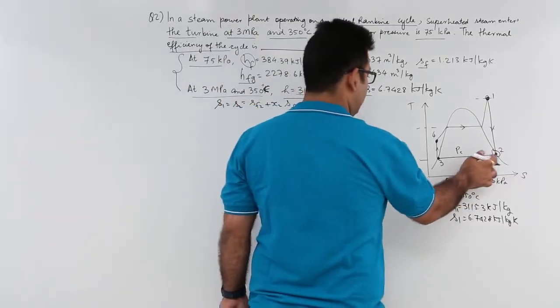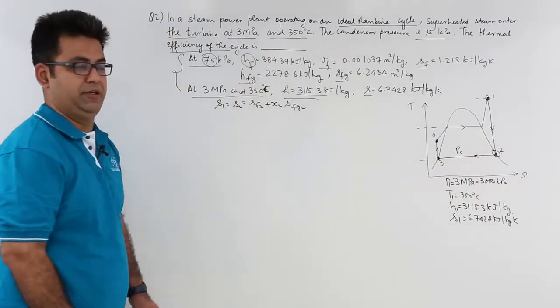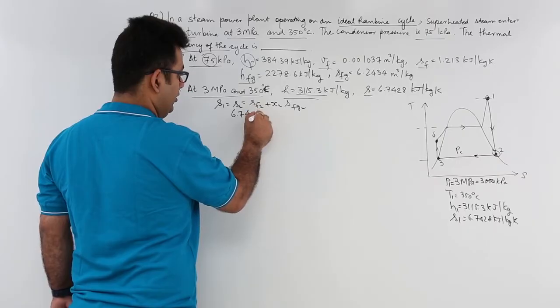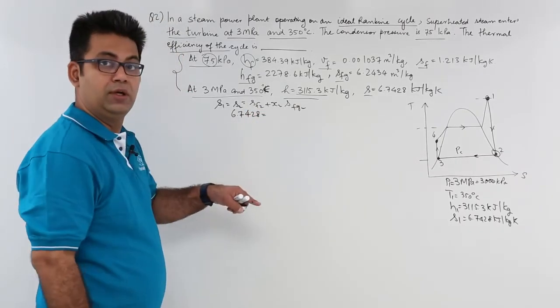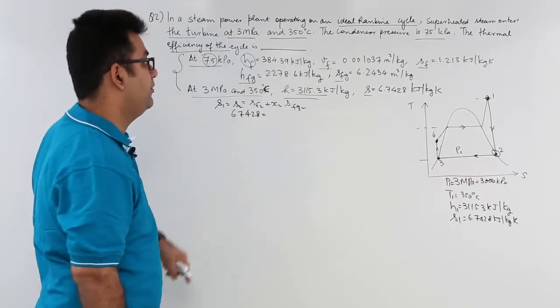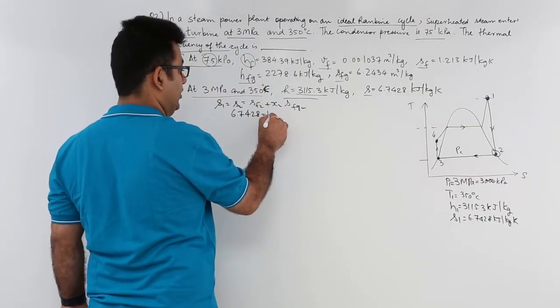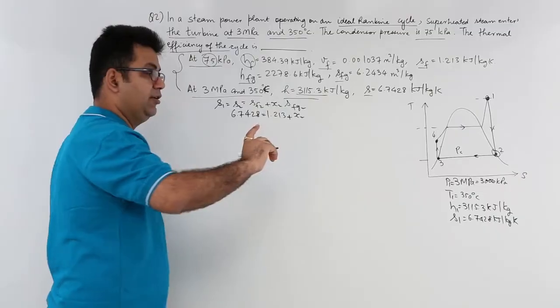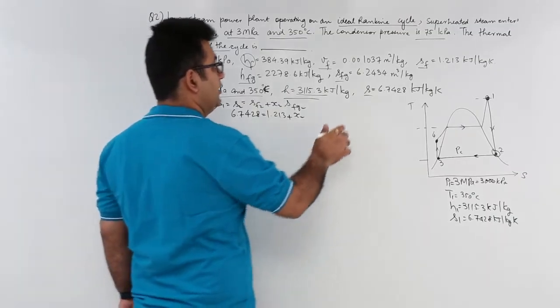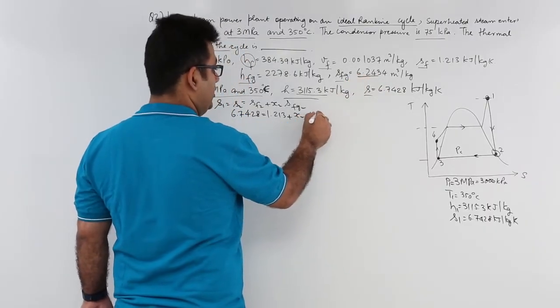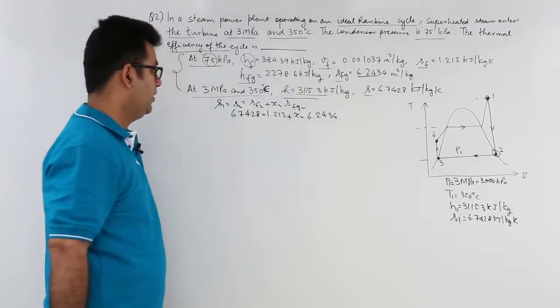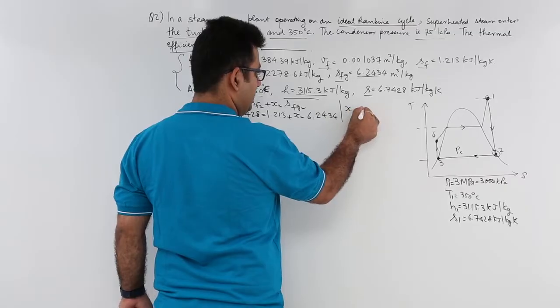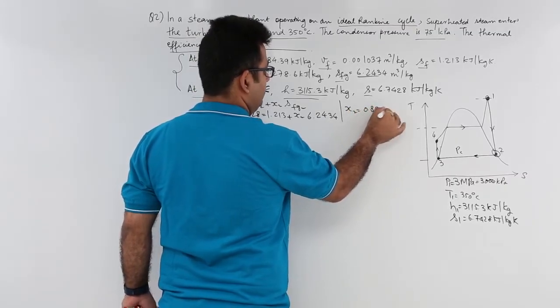2 and 3 are corresponding to 75 KPa pressure. So, 6.7428 equals SF2, liquid entropy at 75 KPa pressure is 1.213, plus X2 into the latent entropy at the condenser pressure which is 6.2434. From this equation, I can find out the value for X2. And the value for X2 comes about to be approximately 0.884.